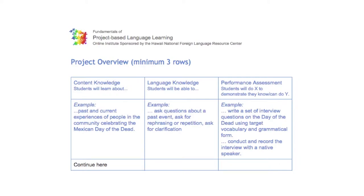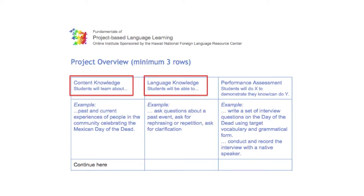When PBL is implemented in language learning contexts, projects have dual goals. One is to acquire content knowledge and the other is to improve communicative competence in the target language. The project overview table in the project blueprint recognizes this dual goal. The first column identifies the content knowledge targeted by the project, the second column identifies the specific areas of language knowledge that the teacher expects learners to develop, and the third column specifies what learners will do to demonstrate that they know the content and have developed their language knowledge.